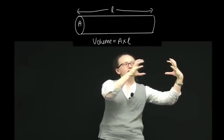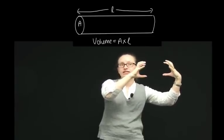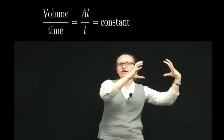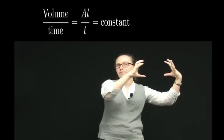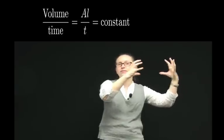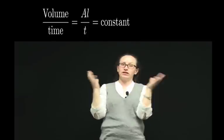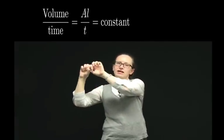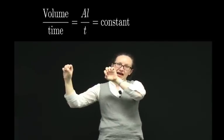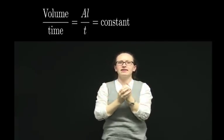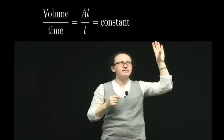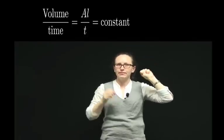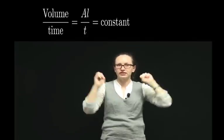So if we have that volume flowing in that unit time, we can write the surface area times the length of the pipe divided by time as constant, because the volume in is the same as the volume out. So we can write this as the surface area times the length over the time is constant.